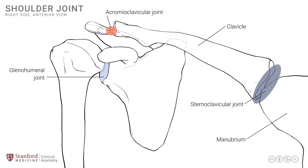In addition to these formal joints, there are a couple of loosely called joints that are not truly joints but are referred to as such in clinical practice. One is just inferior to the acromion, known as the subacromial space. It contains important structures such as the rotator cuff and synovial bursae, and is often the site of chronic shoulder pain — making it an important anatomical structure to identify.